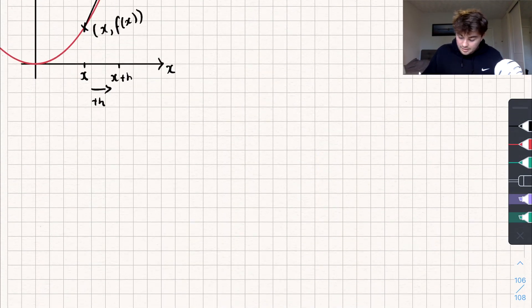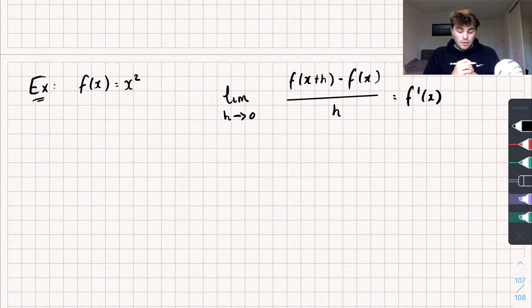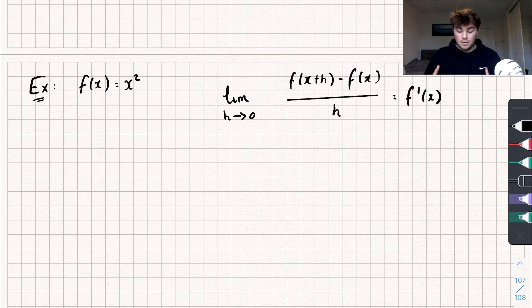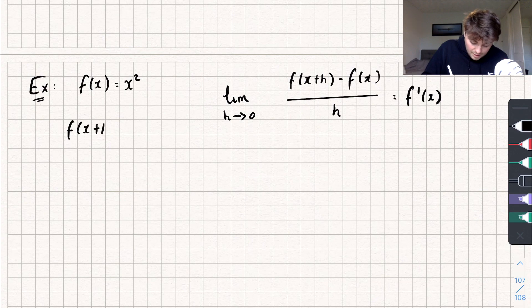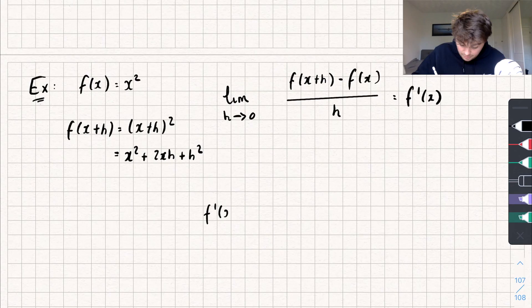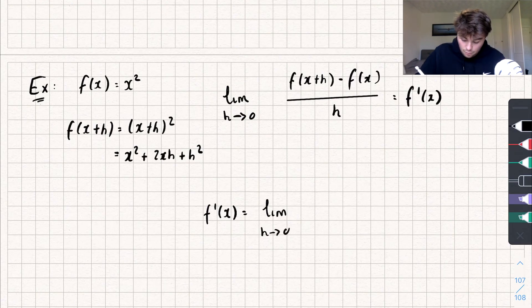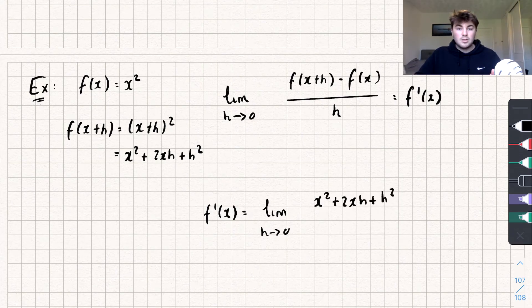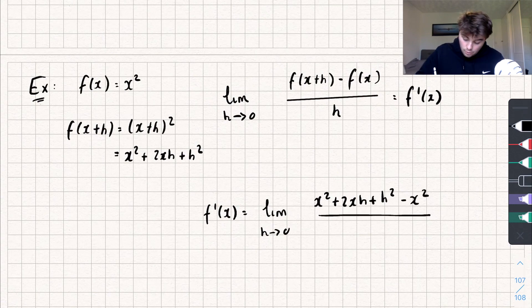So what I'm going to do is copy this formula and we'll do this example: we want to find the gradient of f of x equals x squared from first principles. All I'm going to do is substitute everything into the formula. So what is f of x plus h? Well, if f of x is x squared, then f of x plus h is just x plus h all squared, which equals x squared plus 2xh plus h squared. So the derivative f dash of x is equal to the limit as h tends to 0 of: x squared plus 2xh plus h squared, subtract f of x which is x squared, all divided by h.